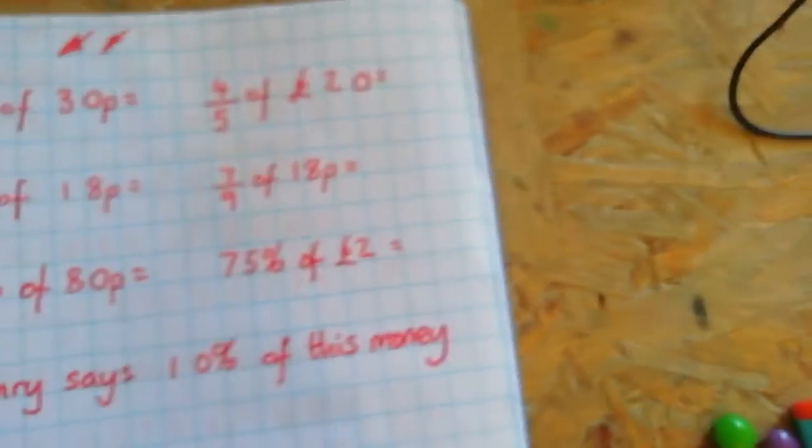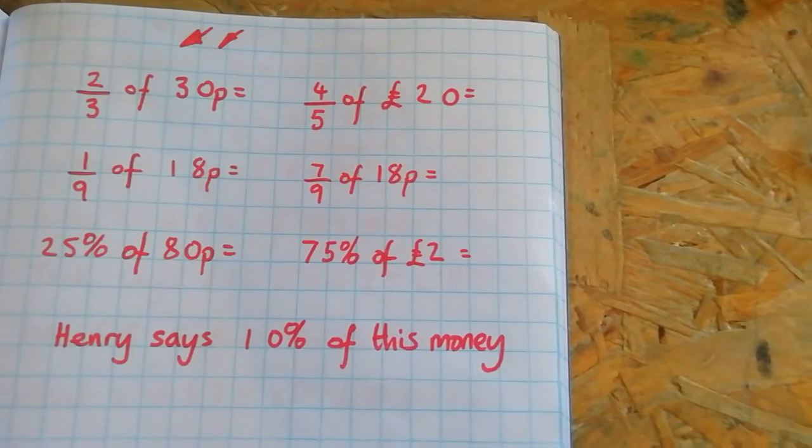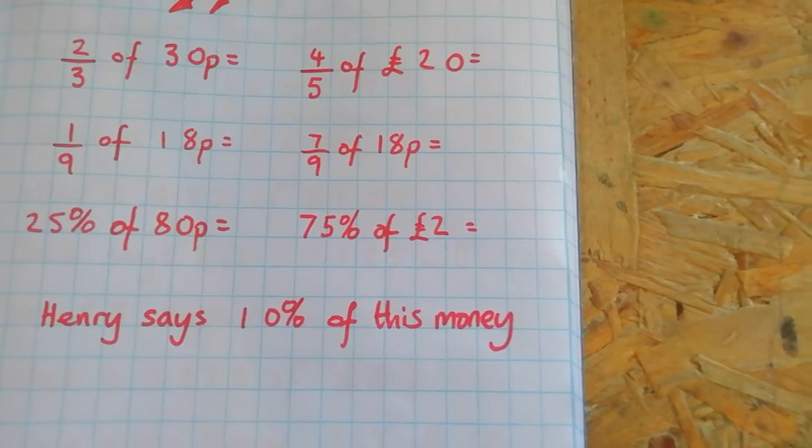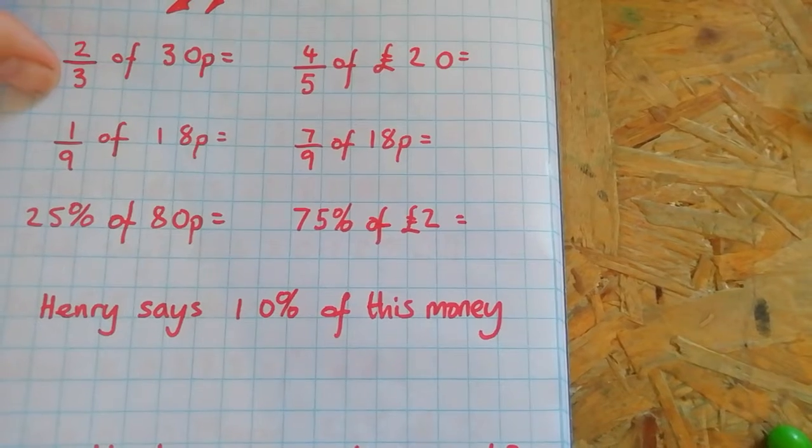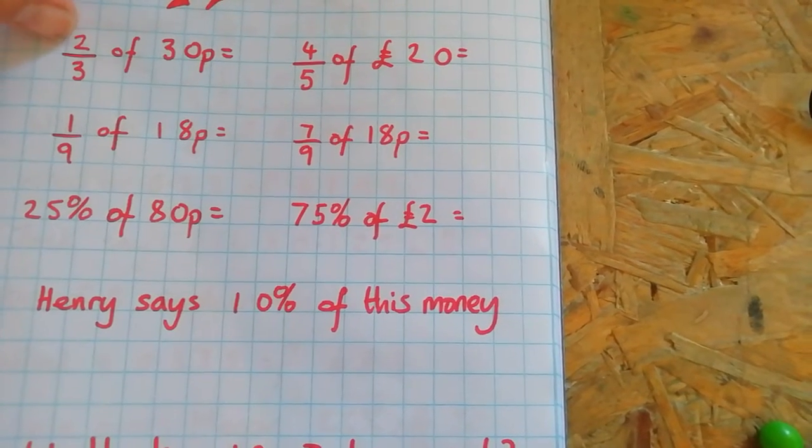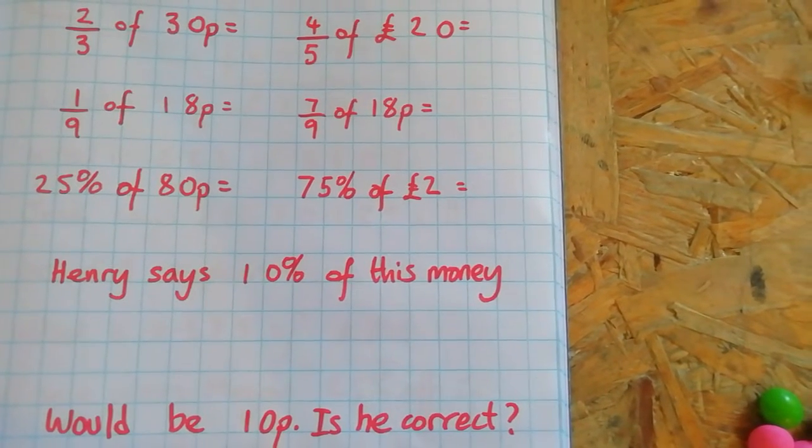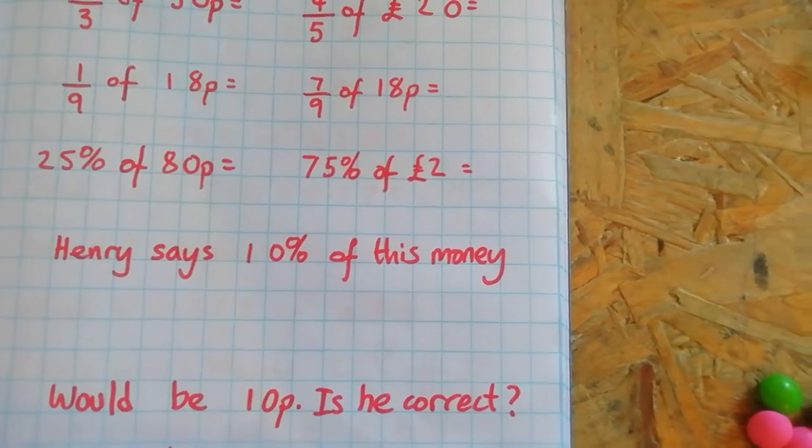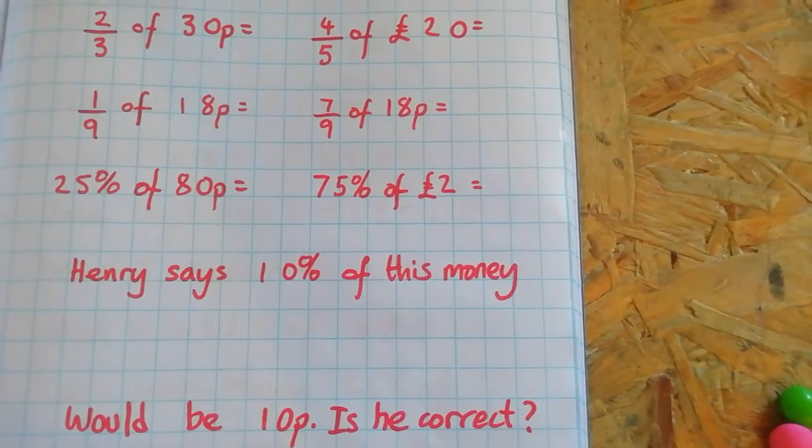On to chili two. Chili two people, we need to know what two thirds of thirty pence is. Exactly the same procedure: divide thirty pence by three and times whatever you get by two. Pause the screen so you can have a go at all of these ones.